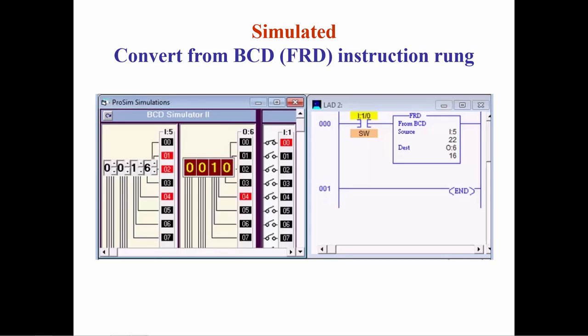The binary representation of the BCD value for a decimal 16 is 0 0 0 1 0 1 1 0. The decimal equivalent of that binary number would be 22. After the FRD instruction converts the BCD value to a binary integer, the binary representation would be 0 0 0 1 0 0 0 0 whose decimal equivalent would be 16.